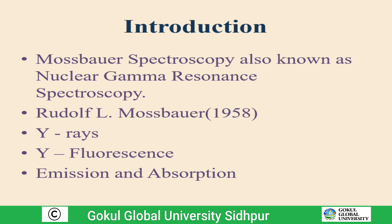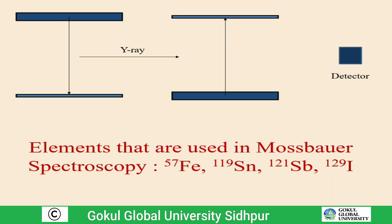Mössbauer spectroscopy involves nuclear transitions which result from the absorption of gamma rays by the sample. It is based on the resonance fluorescence of gamma radiations. Emission and absorption are the most important terms here. An emitter emits gamma rays when transitioning from excited state to ground state, and an absorber — possessing the same atom — absorbs those gamma rays and undergoes transition, resonating.